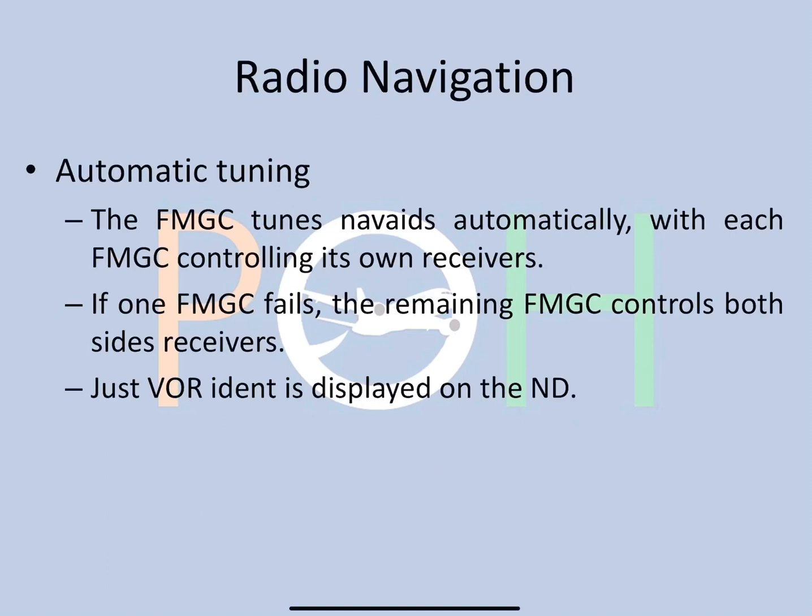Radio navigation — there are three types of tuning in the aircraft. First, automatic tuning, in which the FMGC will tune the nav aids automatically, with each FMGC controlling its own side receivers. For example, FMGC1 will do VOR1, FMGC2 will do VOR2 on respective sides. In case one FMGC fails, the remaining FMGC will control both side receivers. You can identify automatic tuning when the identifier is displayed on the ND in small font.